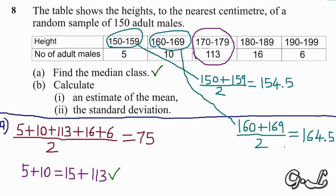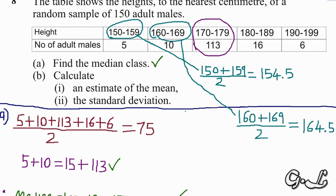To make our work easier, we don't need to keep adding and dividing by 2 for every class. The values we found — 154.5 and 164.5 — are enough. The only thing we need to do is find our class interval.